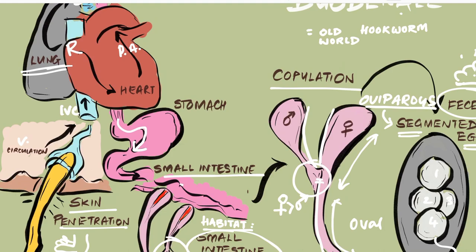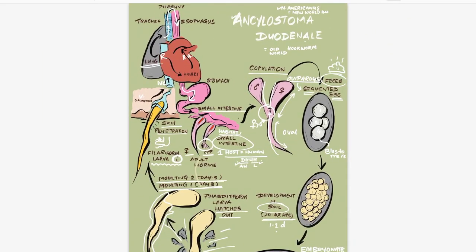From the esophagus, the larva passes through the stomach and reaches its main destination — the small intestine. As you can see, this is the entire course of the life cycle. During this journey, the larval form matures into male and female adult worms, bringing us back to the point from where we started.